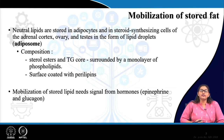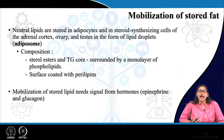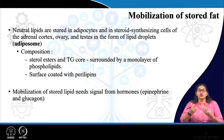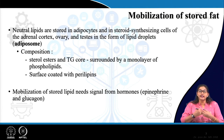Mobilization of stored fat occurs from the storage depot of lipids. Neutral lipids are stored in adipocytes of fat-storing organs like the adrenal cortex. The steroid-synthesizing cells of the adrenal cortex, as well as the sex steroid hormones produced from the ovary and testis, are the tissues where neutral lipids are stored in the form of adiposomes.